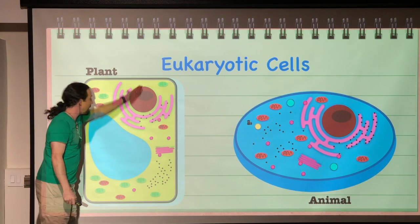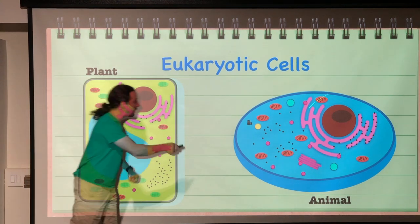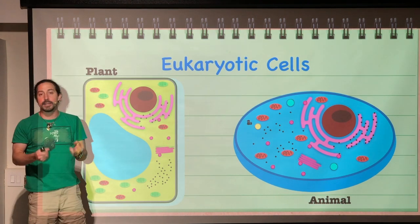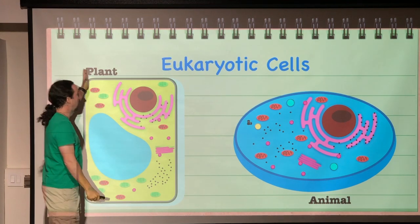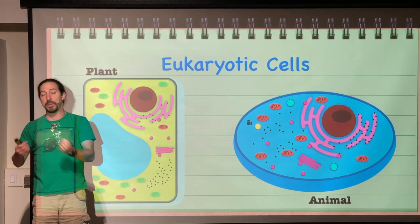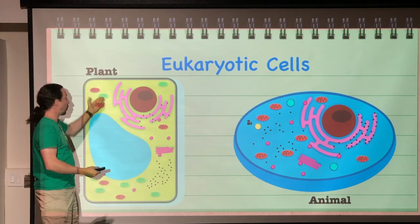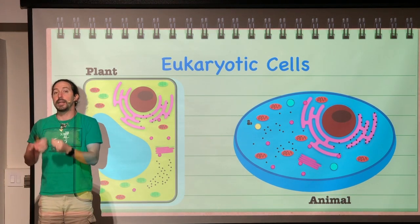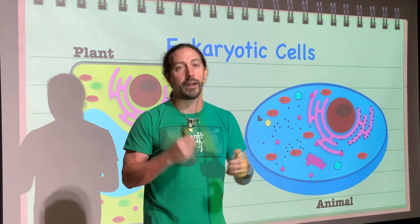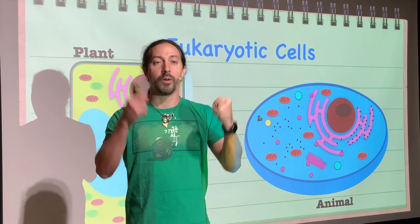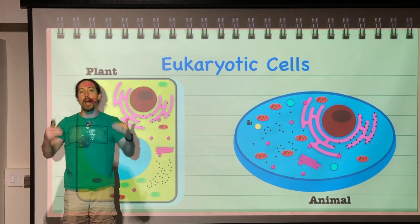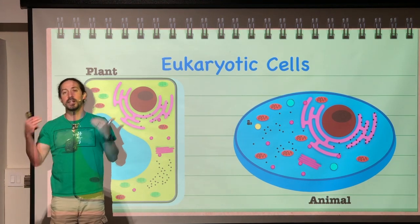Eukaryotic cells, on the other hand, have all these different structural components on the inside — all formed using phospholipid bilayers. The two main types we discuss are plant and animal cells, though fungi are also multicellular eukaryotes with a cell wall but no chloroplast and can't perform photosynthesis. We'll go through these different parts of the cell to see how each part allows the cell to perform the different characteristics of life.